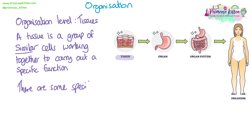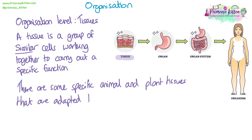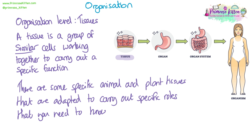There are some specific animal and plant tissues that are adapted to carry out their specific roles either in the body or in a plant, and you need to be able to know those tissues and explain how they carry out their function.